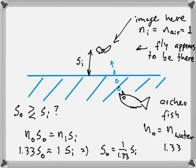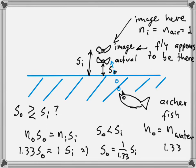Solving for s_o, the distance to the actual fly: s_o = (1 / 1.33) × s_i, which tells us that the distance to the object is less than the distance to the image. The actual fly is closer to the surface than the image appears.